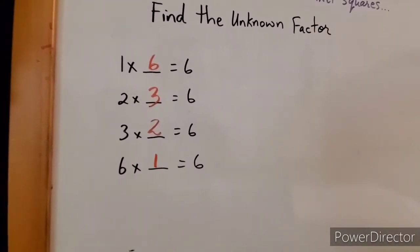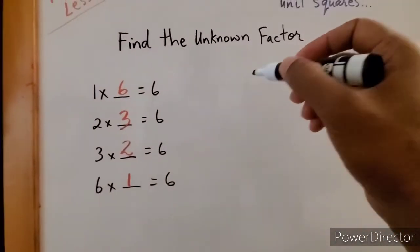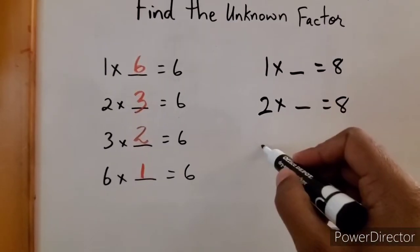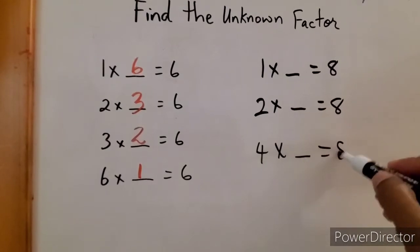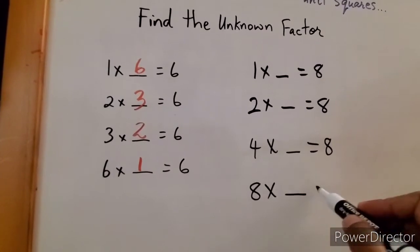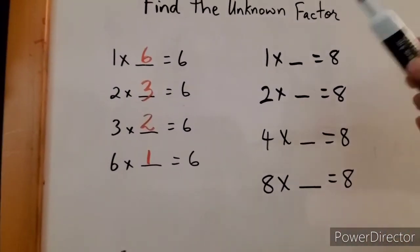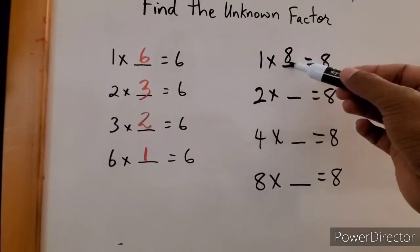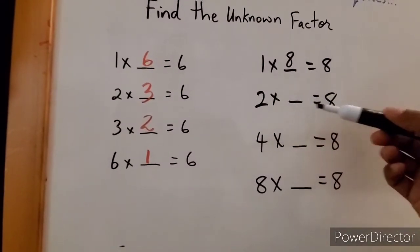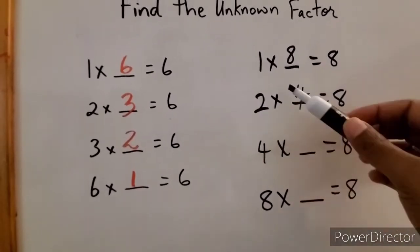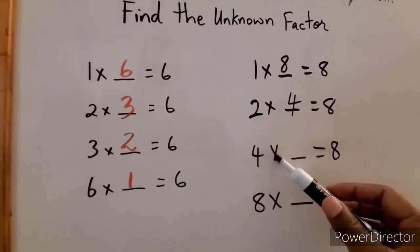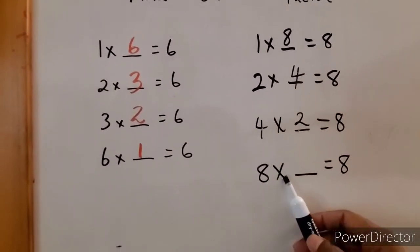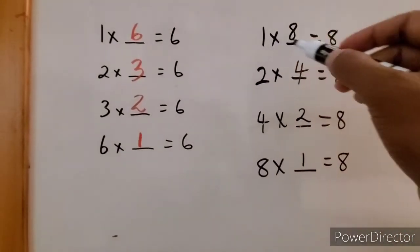Let's do another one with eight. One times blank equals eight, two times blank equals eight, four times blank equals eight, and eight times blank equals eight. One times eight is eight. Two times four gives you eight. Four times two — switching them around — also gives you eight. And eight times one gives you eight because one times eight gives you eight.